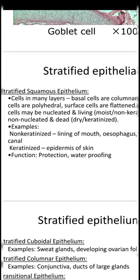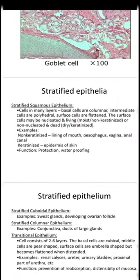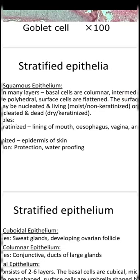Now let's discuss stratified epithelium. In stratified epithelium the cells have multiple layers. On the base there is a basement membrane. Then the basal cells — the first layer above the basement membrane — are columnar. Then there are some polyhedral cells with multiple faces, and the cells on top are flattened. The uppermost cells may be living or non-living. Living cells contain a nucleus, have proper nutrition, and multiply, whereas non-living cells do not have a nucleus — they are dead inside.